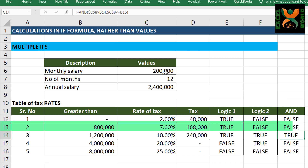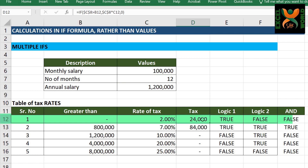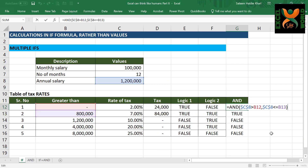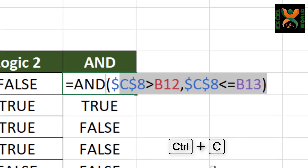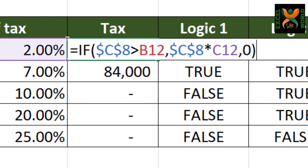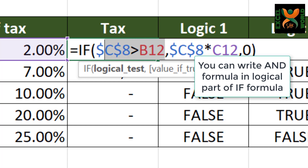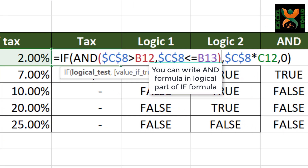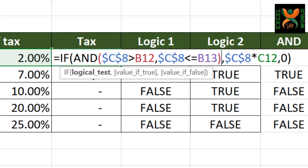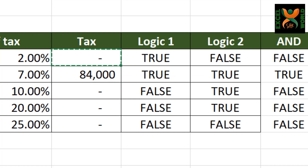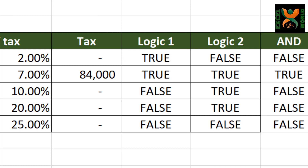We can change the salary to check whether this is dynamic or not. Yes. So let us change our formula for tax. We just have to copy this complete AND formula and paste it into the logical test area of the IF formula. Press Enter, then copy this to the cells below. And correctly, it has ignored the first slab and calculated the tax in the correct slab.